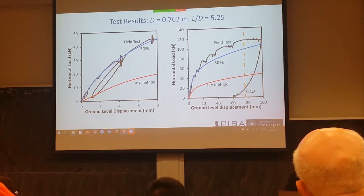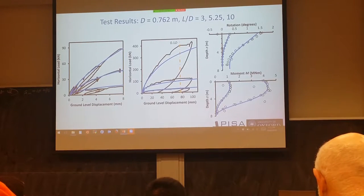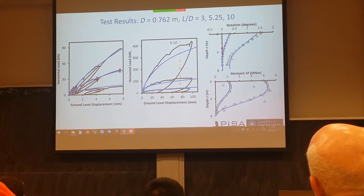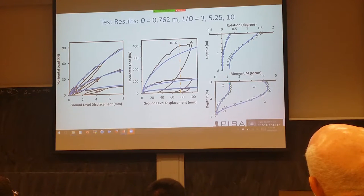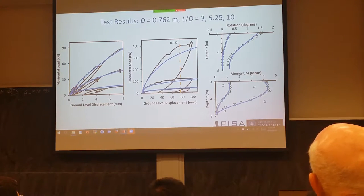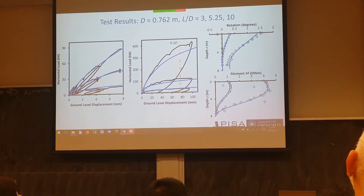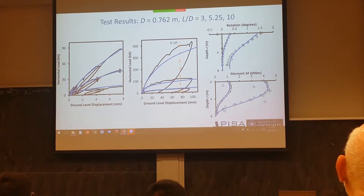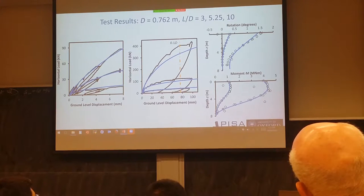Looking at multiple piles of different lengths — longer piles give a stiffer response — we again see a good comparison with the predictions. The predictions also included the distribution of rotation down the depth of the pile and the bending moment, and since the piles were very heavily instrumented, we were able to compare predicted and measured moments. They fit quite well. We were very happy that the finite element analysis provided a good explanation of the observations in the field.